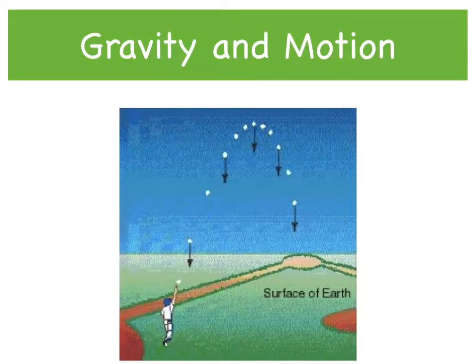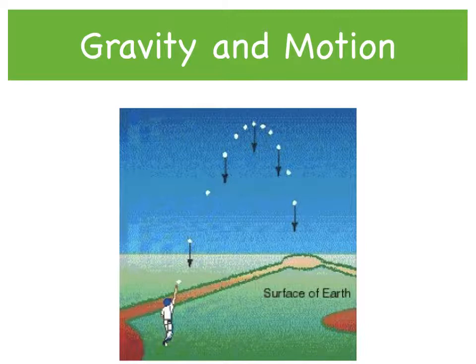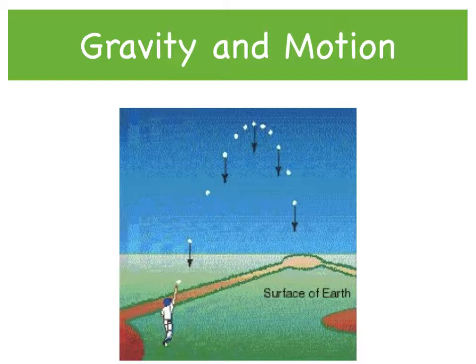Imagine you throw a ball into the air. You exert a force on the ball to make it go up. But the ball falls back to Earth. Why? Because of gravity. The gravity of Earth exerts a force that pulls the ball down.